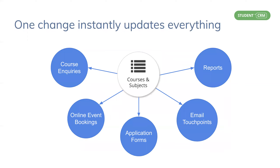For course inquiries, students can select a future year of entry and see the correct courses from that year. Officers can respond with correct course information, and you capture the prospective students' course of interest for marketing. For online event bookings, they can book onto the events for their chosen course, as your event forms are automatically updated with the latest course list, as are course groups in open days. And again, you capture the prospective students' course of interest for marketing.